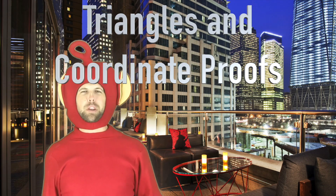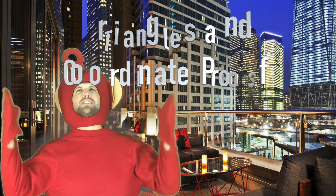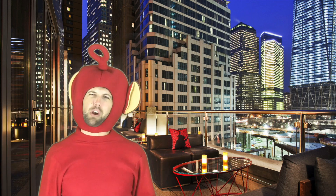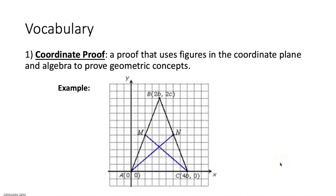Today we're talking about triangles and coordinate proofs. A coordinate proof is a proof that uses figures in the coordinate plane and algebra to prove geometric concepts. We're going to be dealing with certain geometric figures that are created on a set of axes — the X and the Y axes.